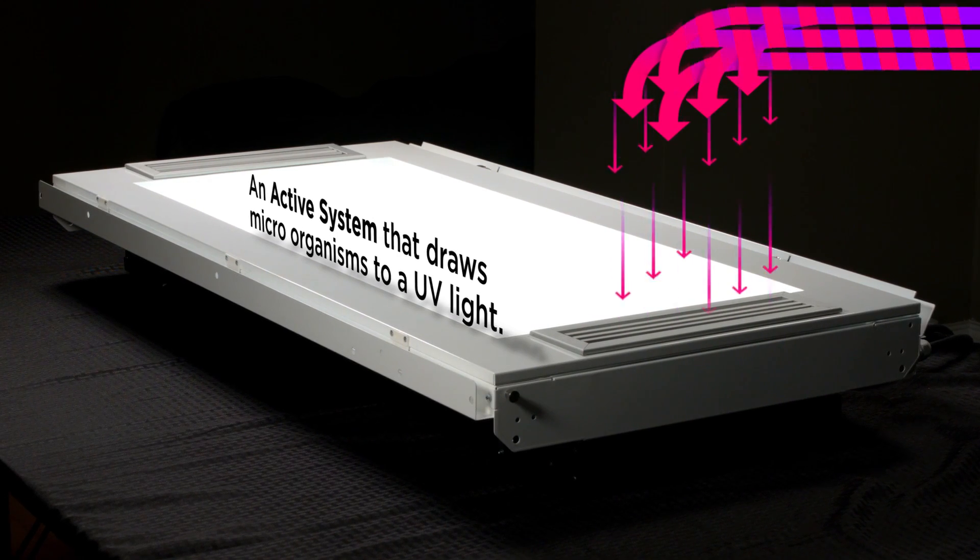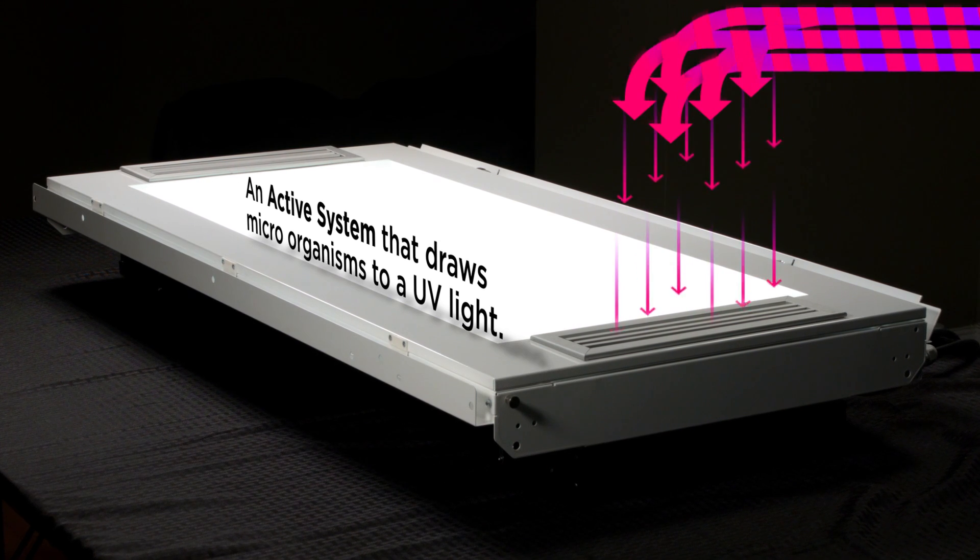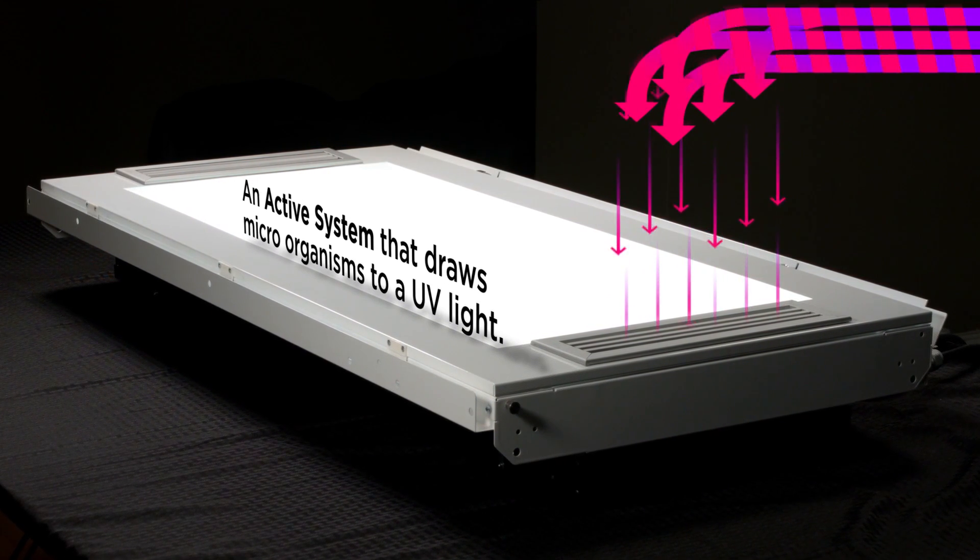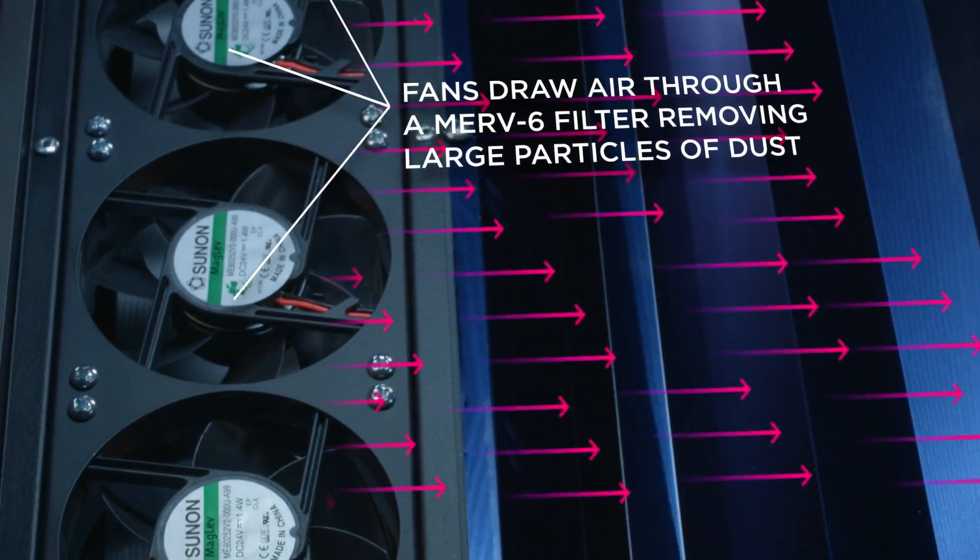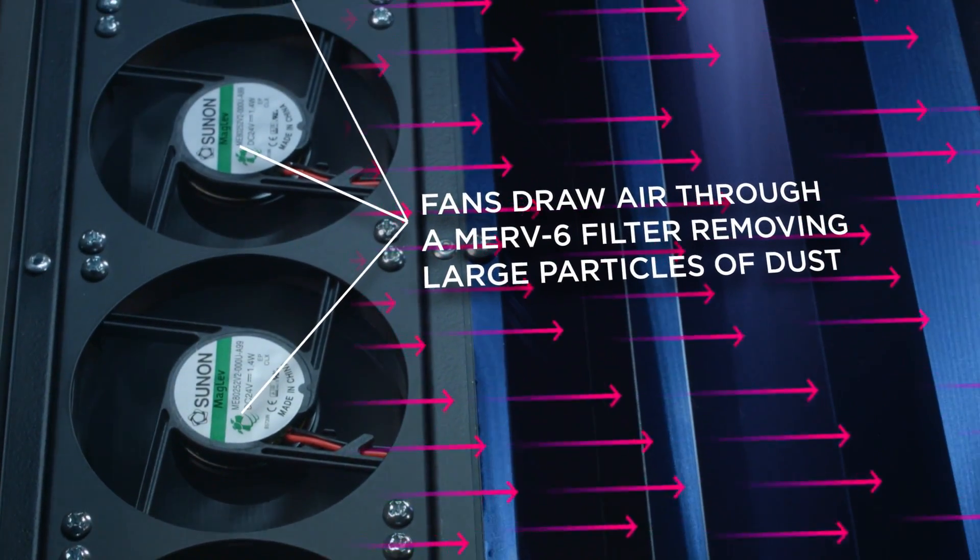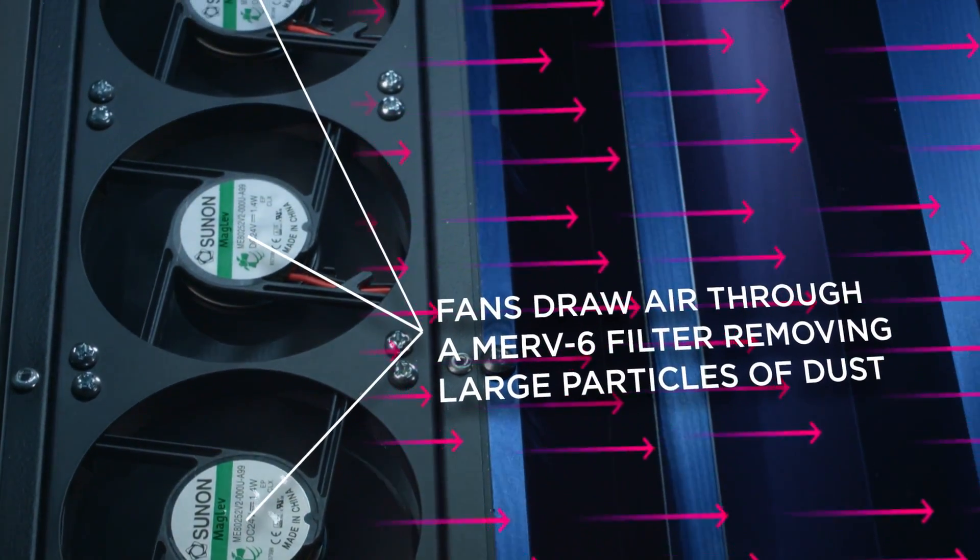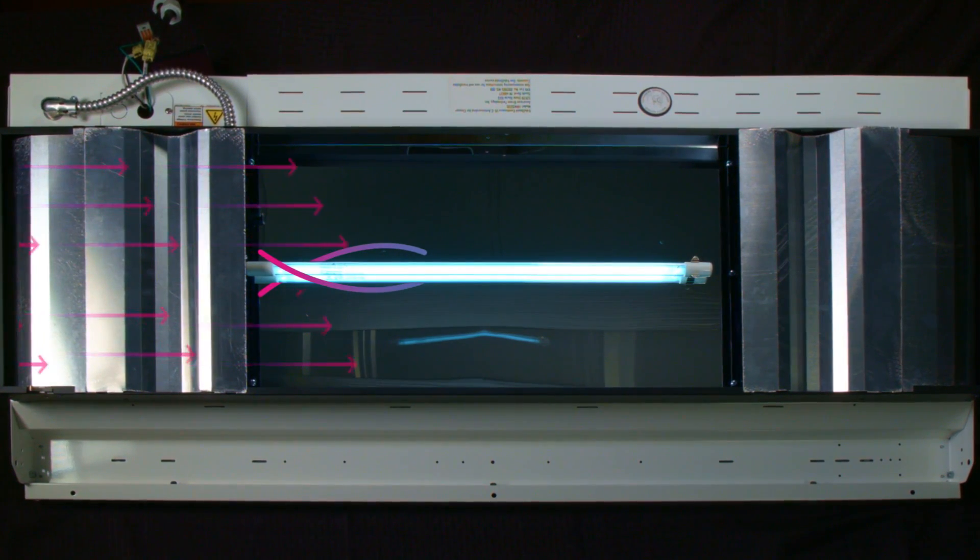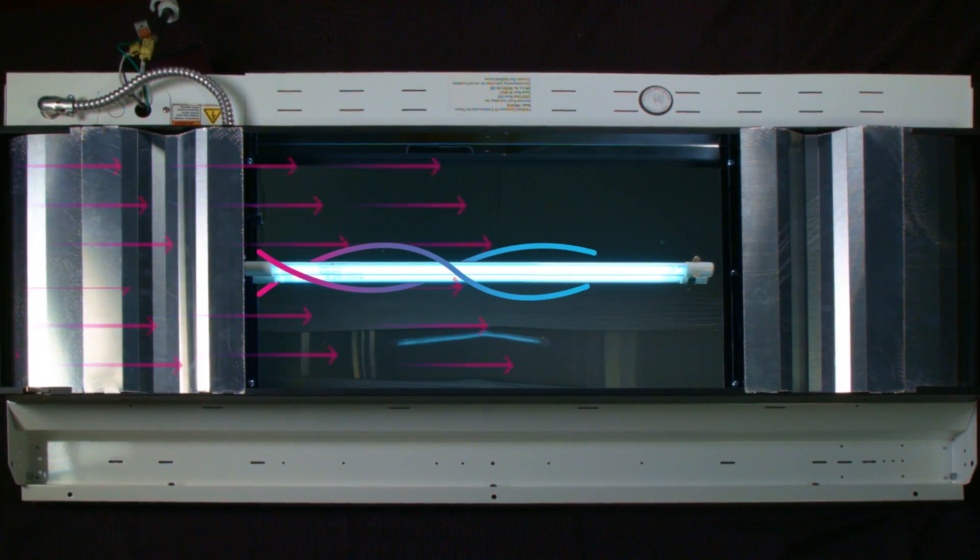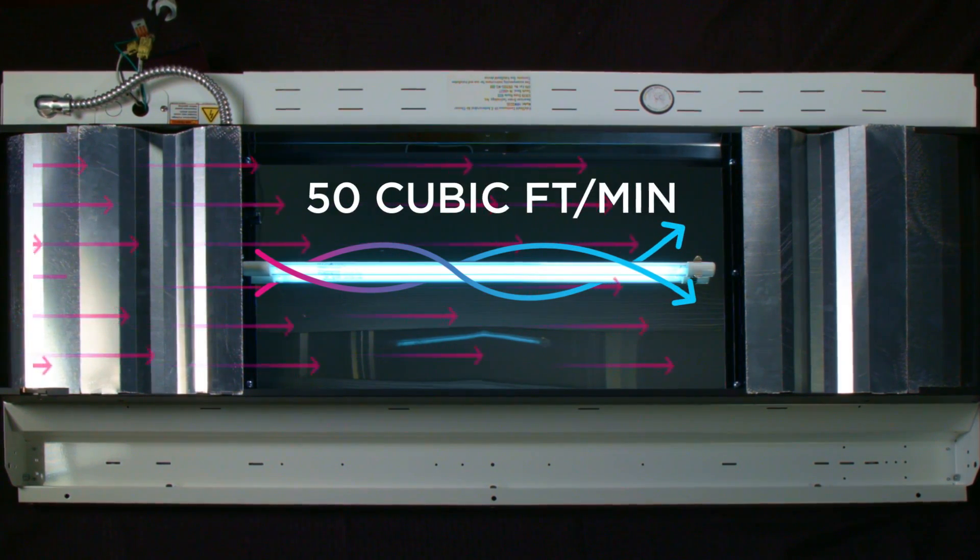The patented VitaShield is an active system that draws microorganisms to a UV light. There are two vents on the face of the fixture. Behind one is an array of fans which draws air through a MERV-6 filter which removes larger particulates of dust. Air is pulled through the filter into the UV chamber mounted on the back of the fixture at approximately 50 cubic feet per minute.